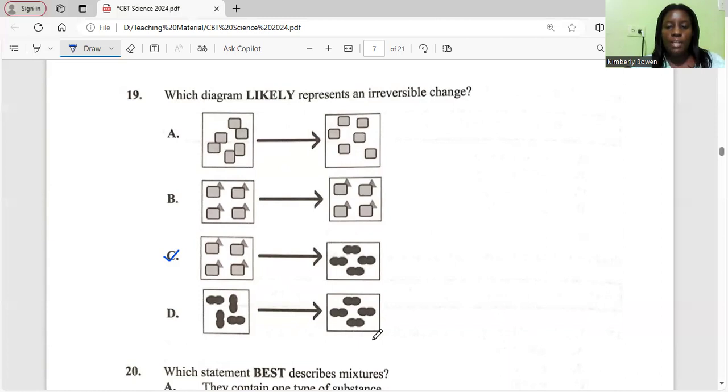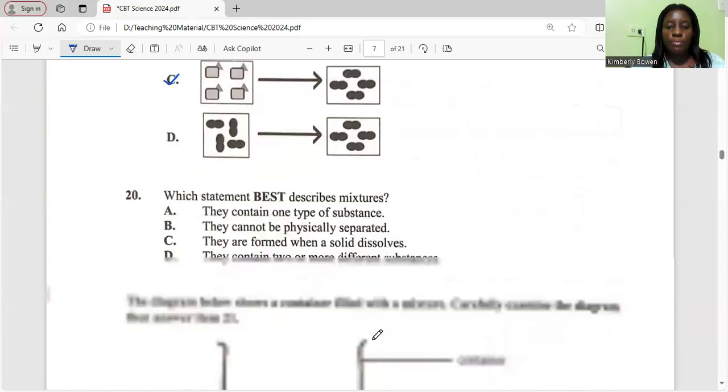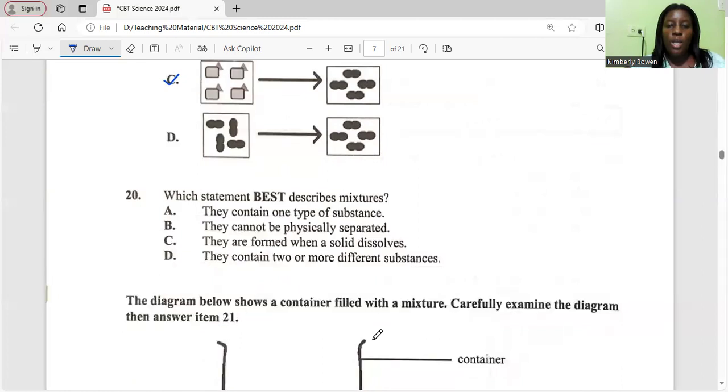Number 15, it says which statement best describes mixtures? They contain one type of substance, they cannot be physically separated, they are formed when a solid dissolves, or they contain two or more different substances. The correct answer is they contain two or more different substances. All right, so there you have it, the first part. I'm going to try not to do the video as long because I just want you to be able to watch the video.